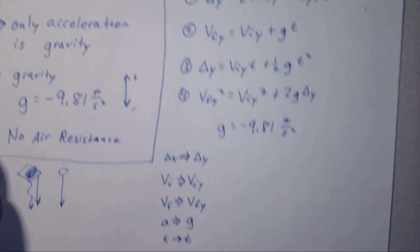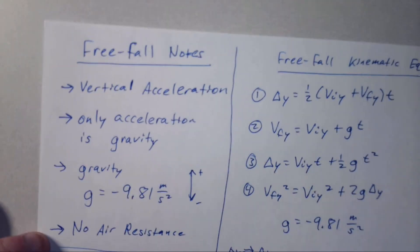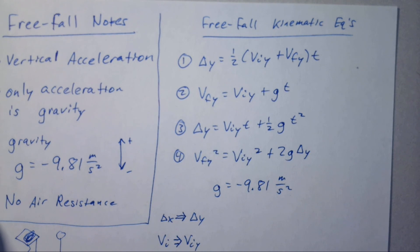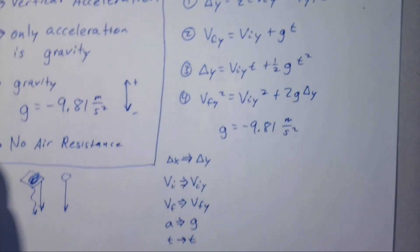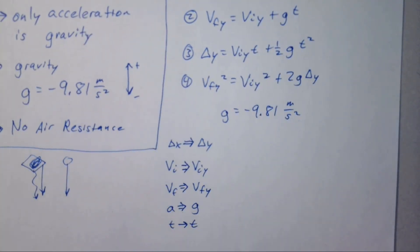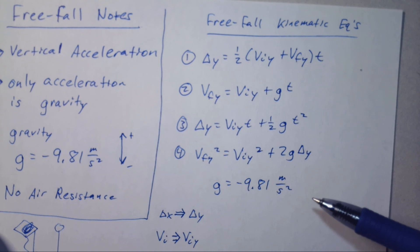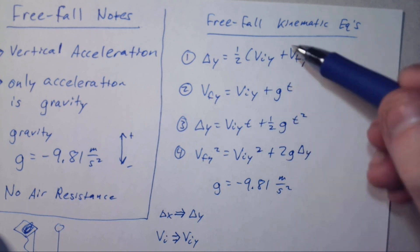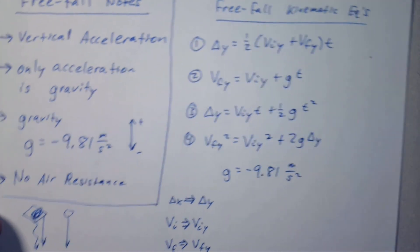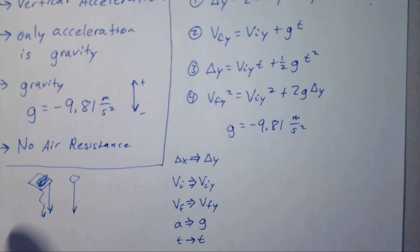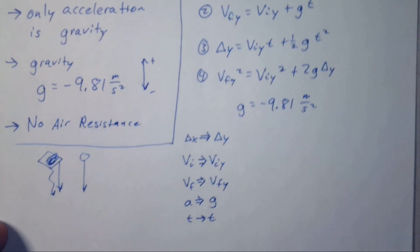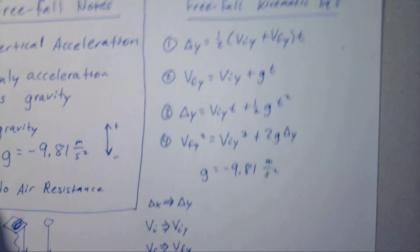The nice thing about free fall is that with horizontal acceleration, a may have been something we had to solve for. As long as we are on Earth, and you should always assume that unless otherwise stated, this g value is a known value that will always be there. That's helpful when solving problems.